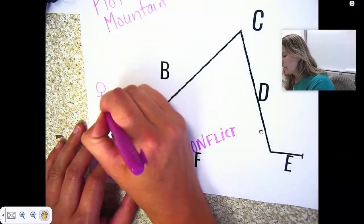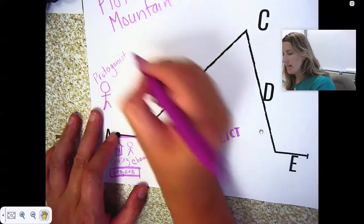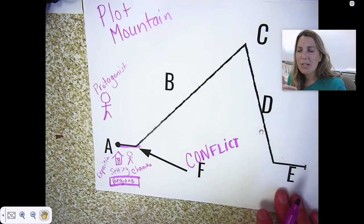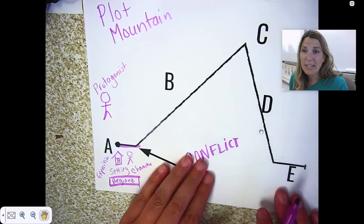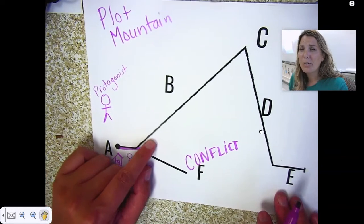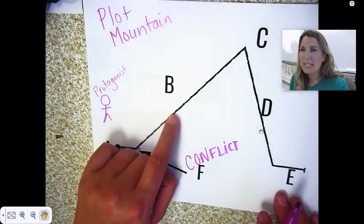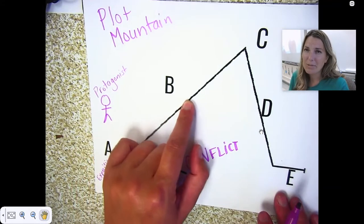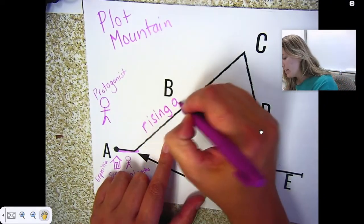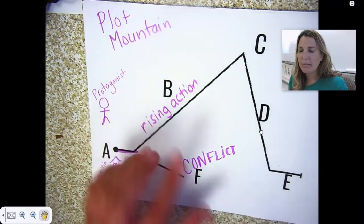The main character is called the protagonist. As the protagonist climbs up the plot mountain and as you read the story, the protagonist is trying to solve the conflict. There might be other conflicts that start along the way. The protagonist tries something and fails, keeps trying and fails — this is called the rising action.